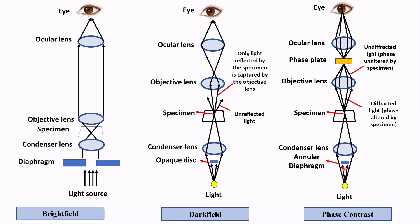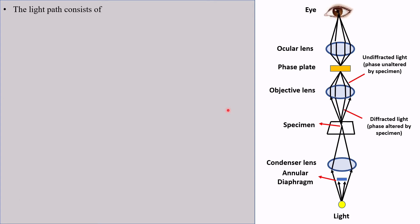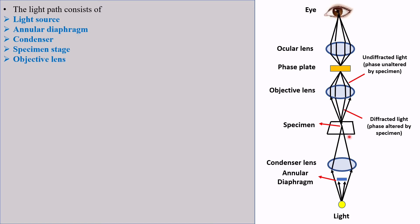The first modification is the annular diaphragm, which is placed in place of the opaque disc. The annular diaphragm is almost the same thing as an opaque disc with a little modification. The major modification in the phase contrast microscope is that a phase plate is placed between the objective and ocular lens. The light path of the phase contrast microscope consists of the light source, annular diaphragm, condenser lens, specimen stage, objective lens, phase plate, and ocular lens.